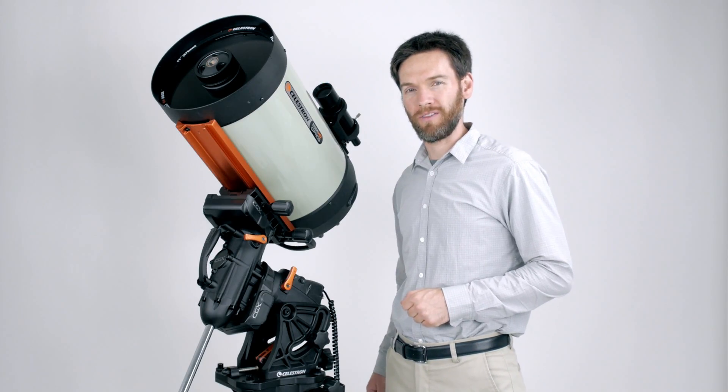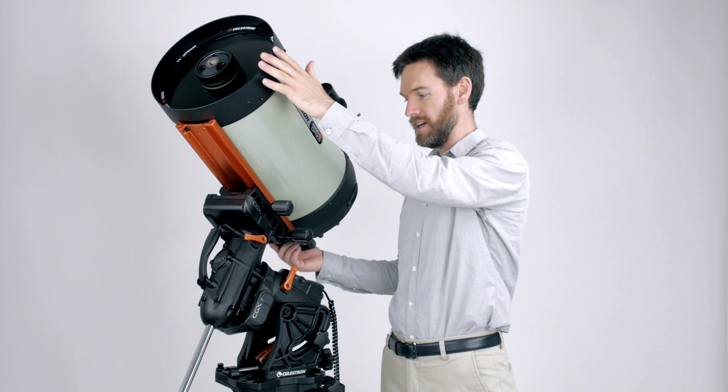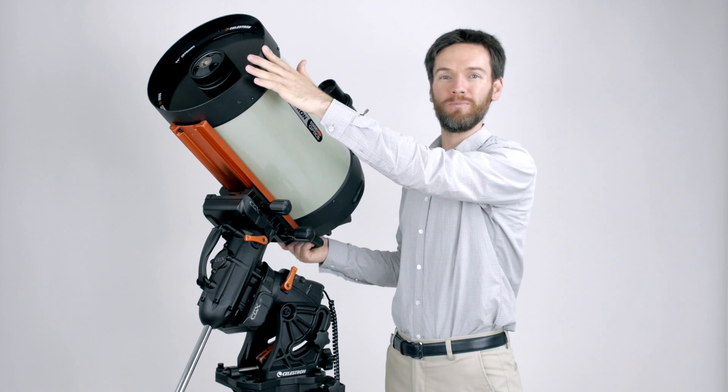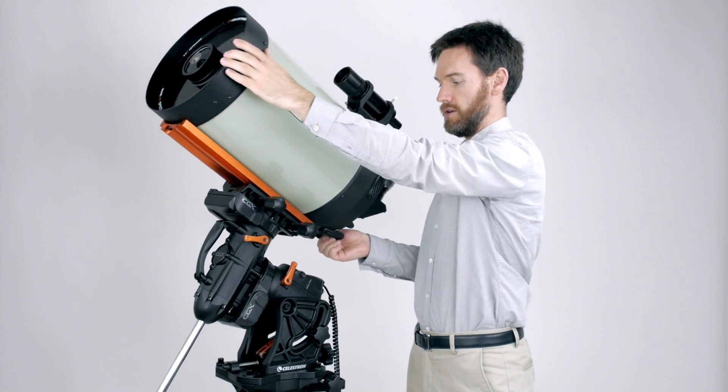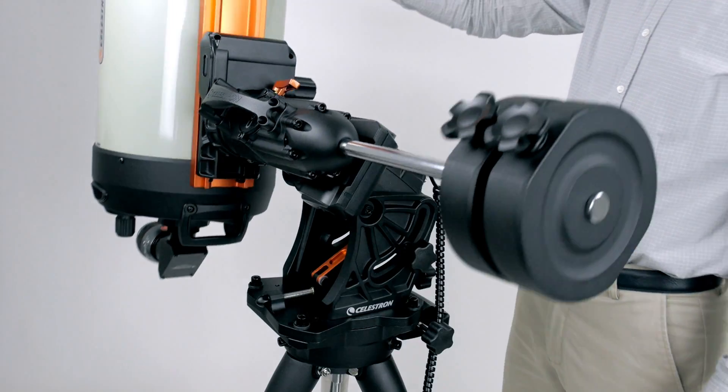For all the backyard observatories out there, you will definitely appreciate that this mount has home and limit switches built in. It will always be able to return to its home position, and it will always know where the slew limits are in the mount.